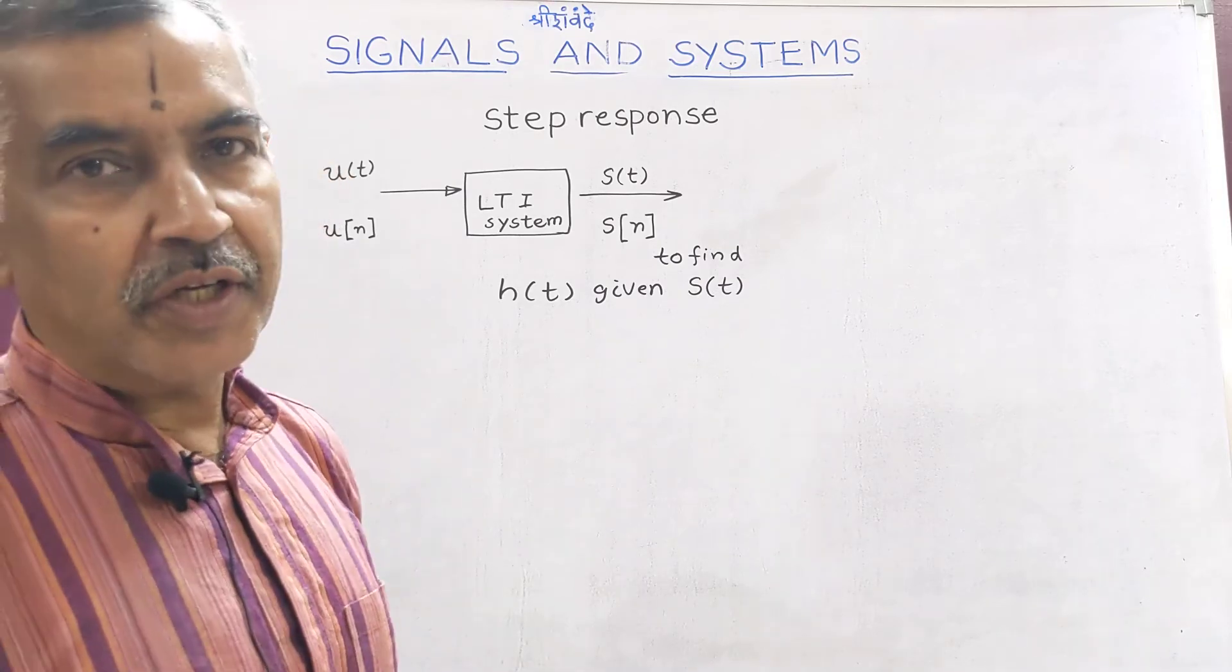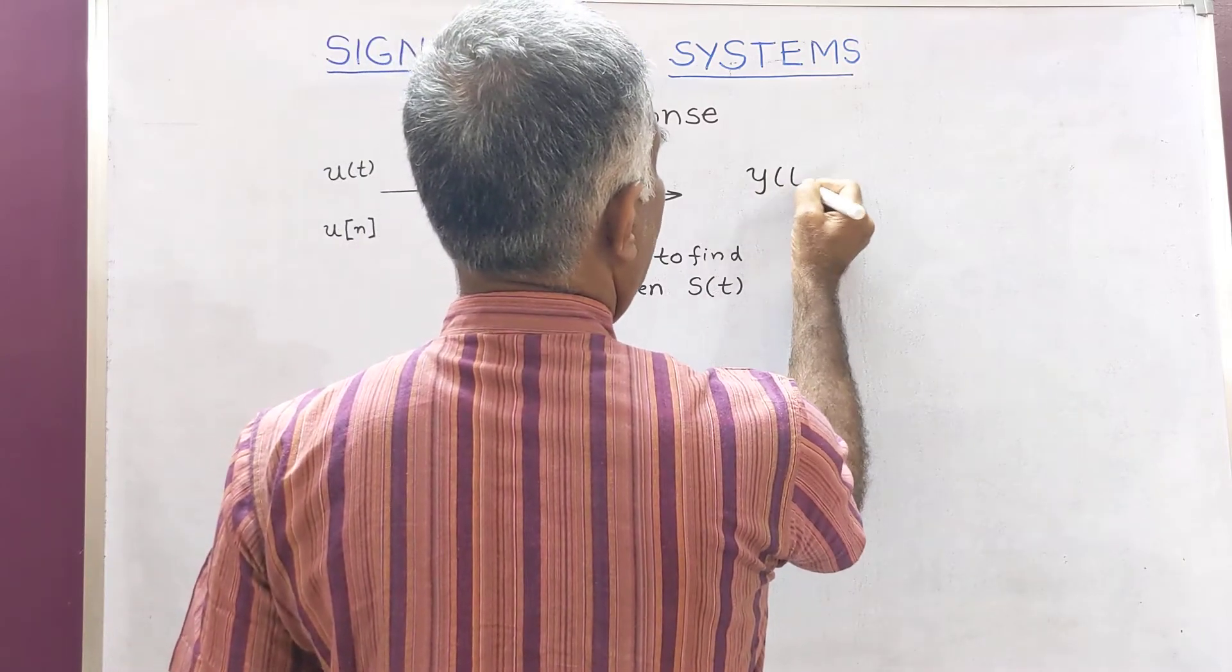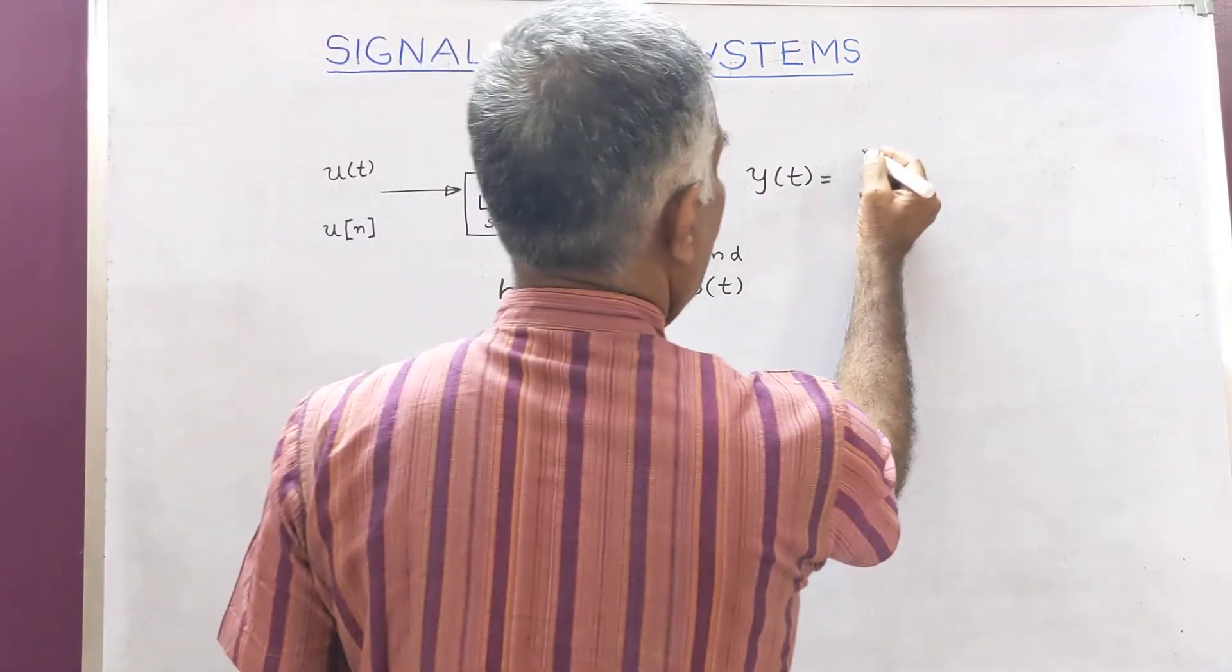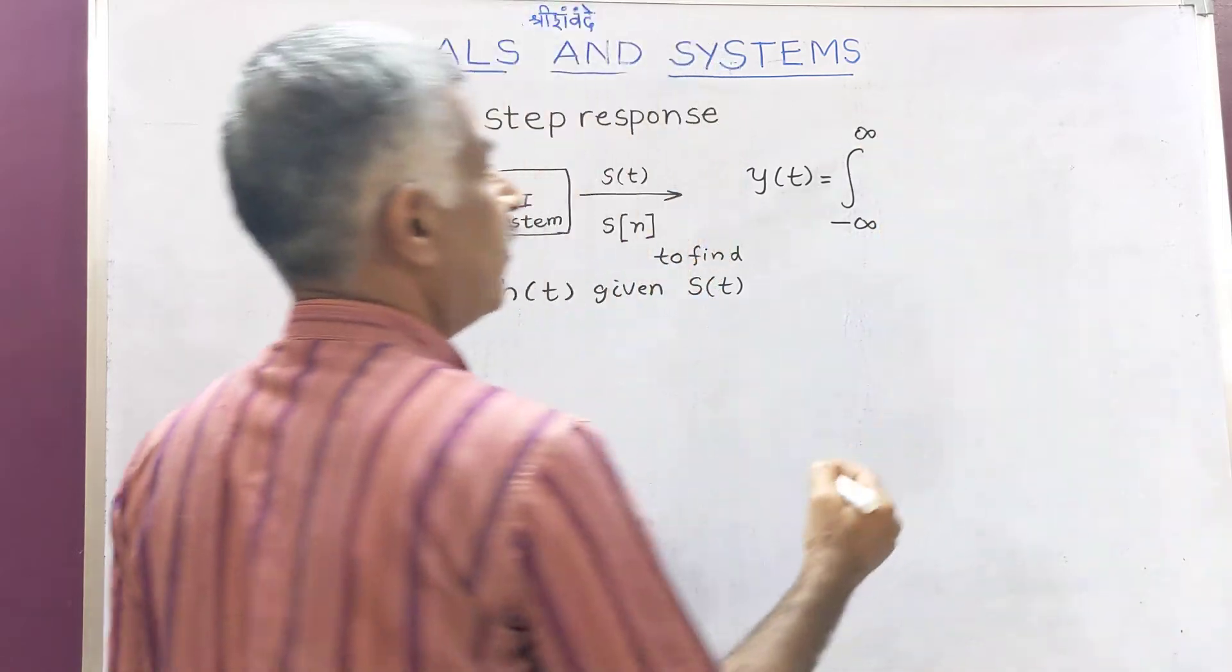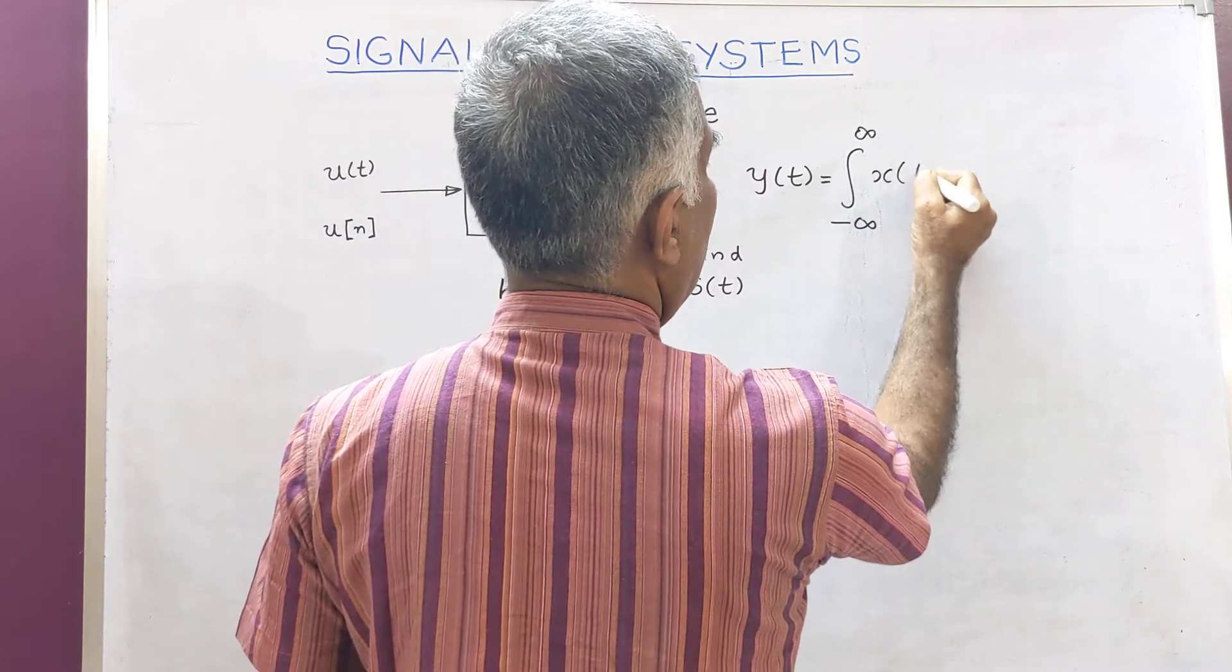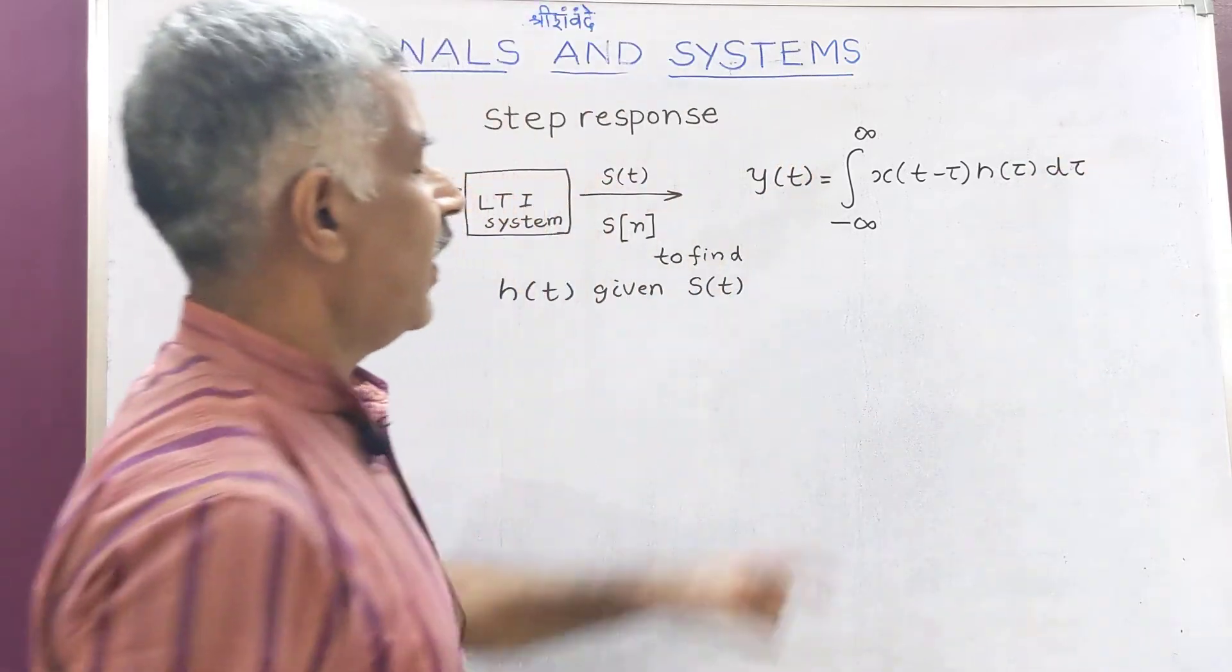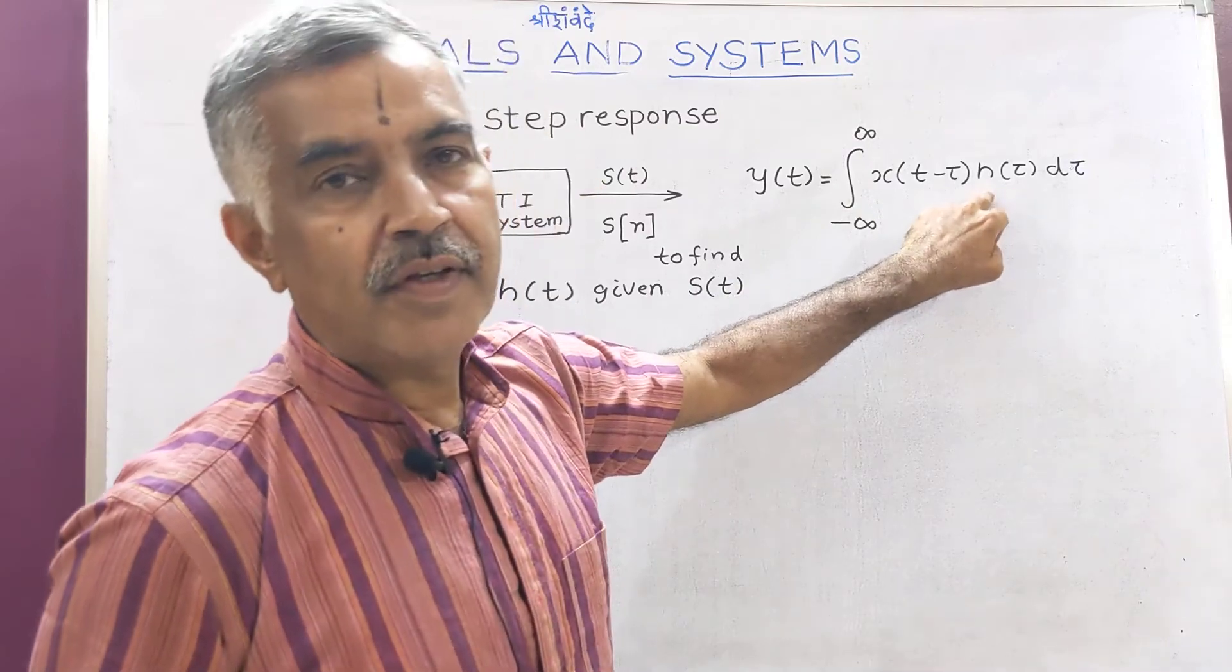Now I would like to remind you about the convolution integral. The convolution integral gives the output of an LTI system to any arbitrary input: integral from minus infinity to plus infinity of X of T minus tau times H of tau d tau, where X of T is the input and H of T is the impulse response.